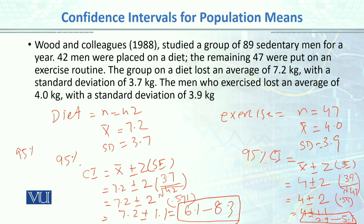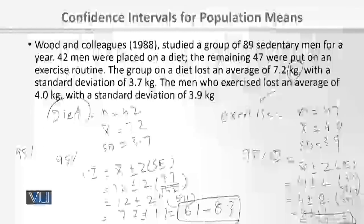So for the population: if someone follows an exercise plan, their average weight loss would be between 2.9 and 5.1 kg. If someone follows a diet plan, their average weight loss would be between 6.1 and 8.3 kg. We can clearly see that weight loss in the population is greater with a diet plan compared to an exercise-only plan.